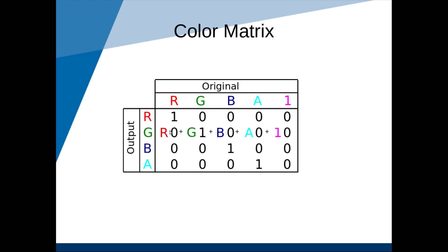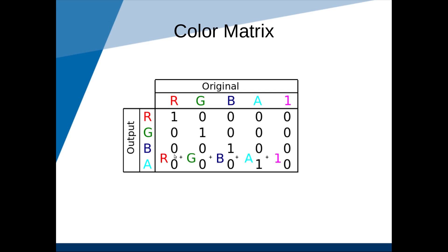The new green is defined by the old green, with all other colors multiplied by 0. The new blue is the old blue. The new transparency is the old red times 0, plus old green times 0, plus old blue times 0, plus the old alpha, plus a constant. In other words, this is an identity matrix — the picture remains exactly the same. Red is mapped to red, green to green, blue to blue, and alpha to alpha.